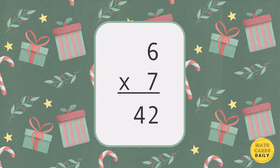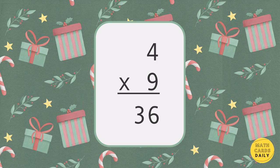6 times 7 equals 42. 6 times 5 equals 30. 4 times 9 equals 36.